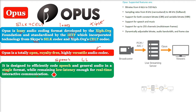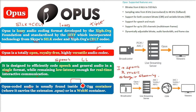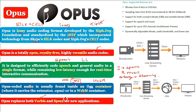Opus is unmatched for interactive speech and music transmission over the Internet, but is also intended for storage and streaming applications. Opus coded audio is usually found inside an OGG container with the extension .opus or in a WebM container. Opus replaces both Vorbis and Speex for new applications.